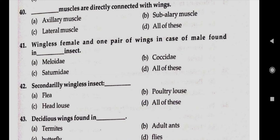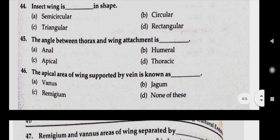Question number forty-three: deciduous wings are found in. Answer A, termites. Question number forty-four: insect wing is dash in shape. Answer C, triangular.